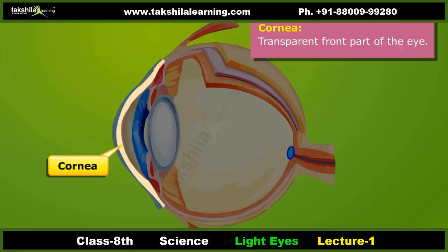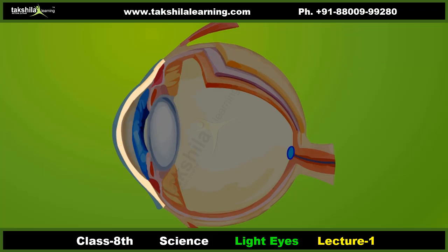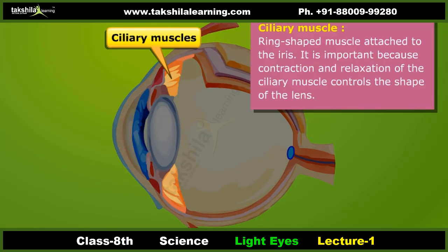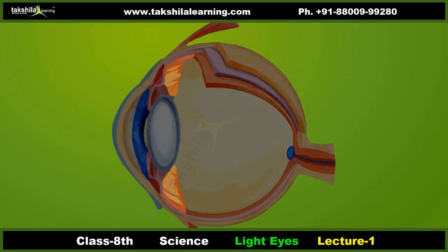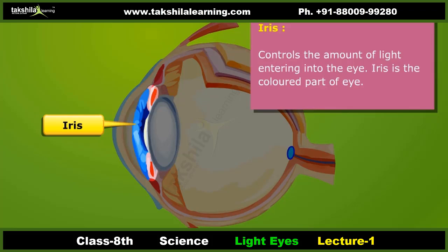Cornea: It is the transparent front part of the eye and does not have blood vessels. Ciliary muscles: These are ring-shaped muscles attached to the iris. The contraction and relaxation of ciliary muscles control the shape of the lens.